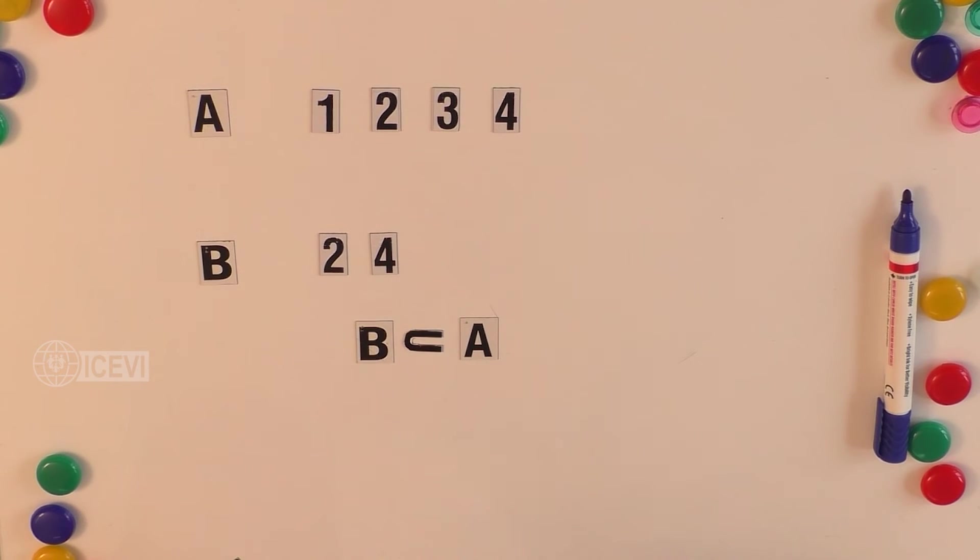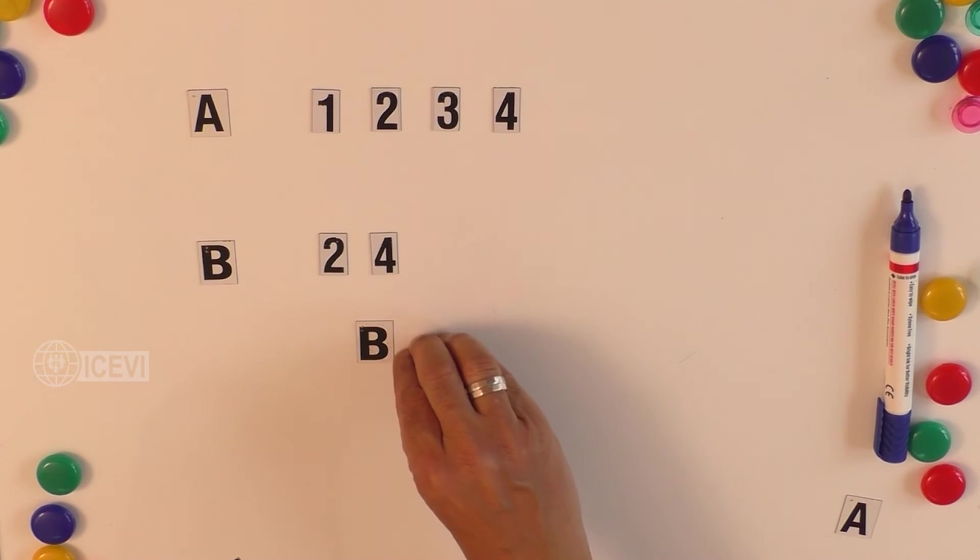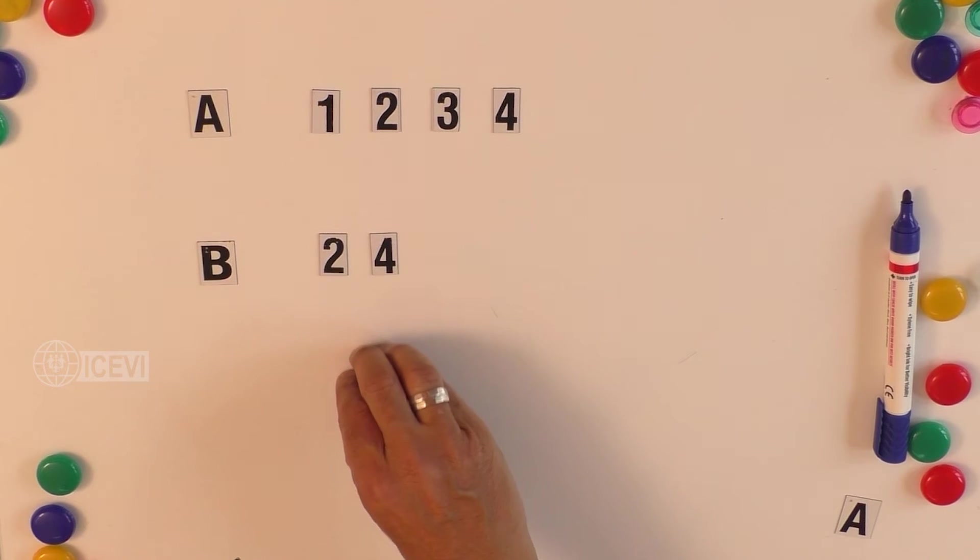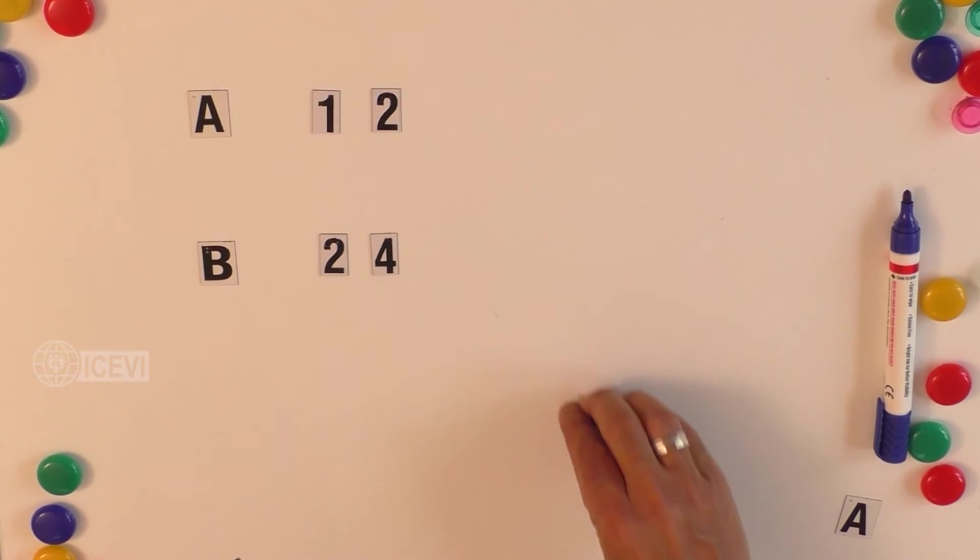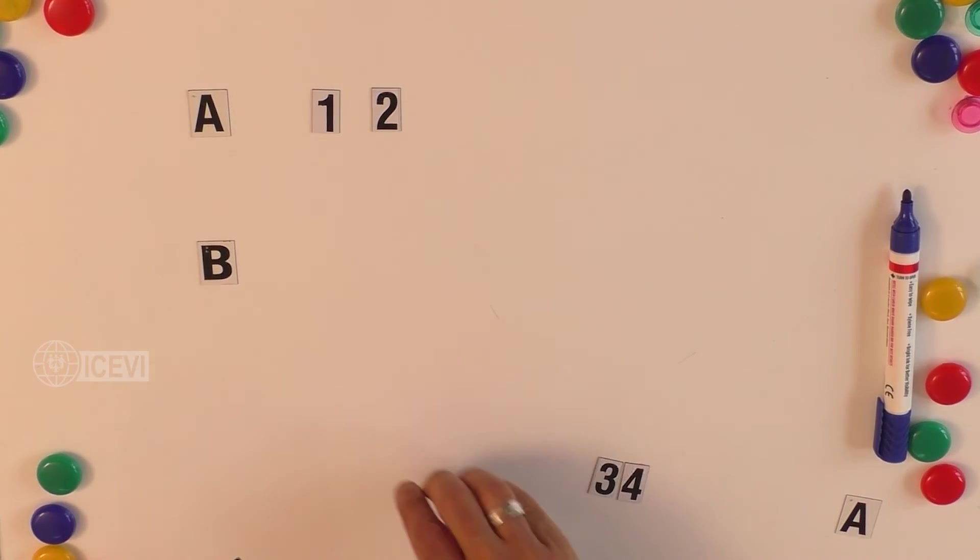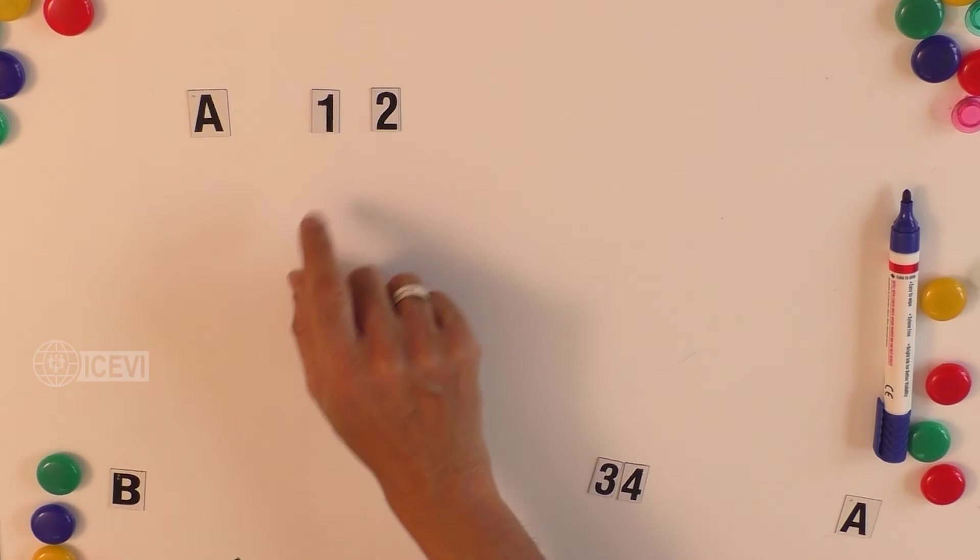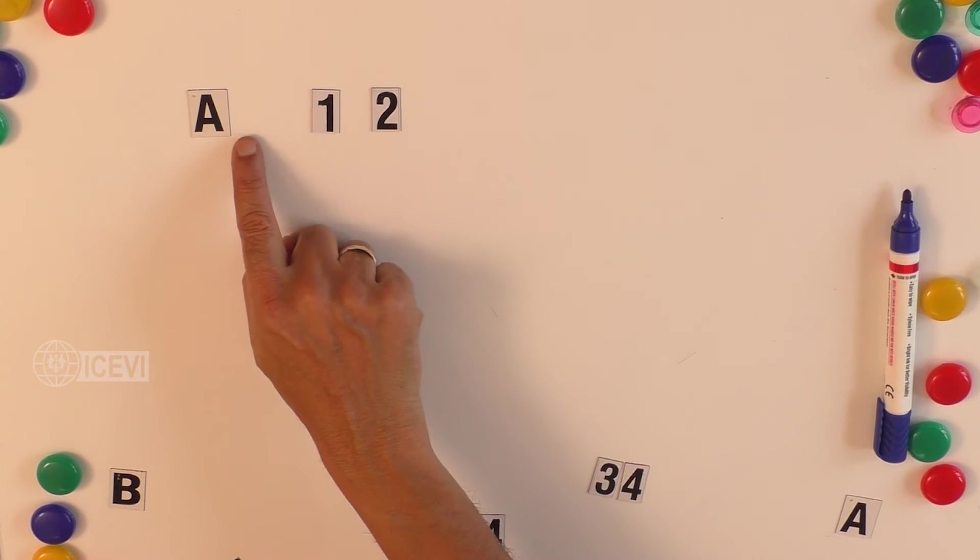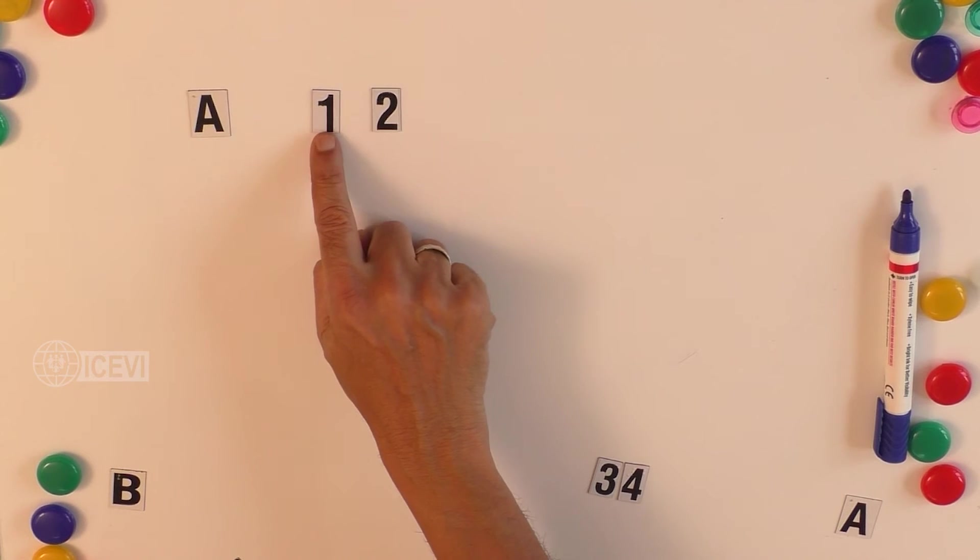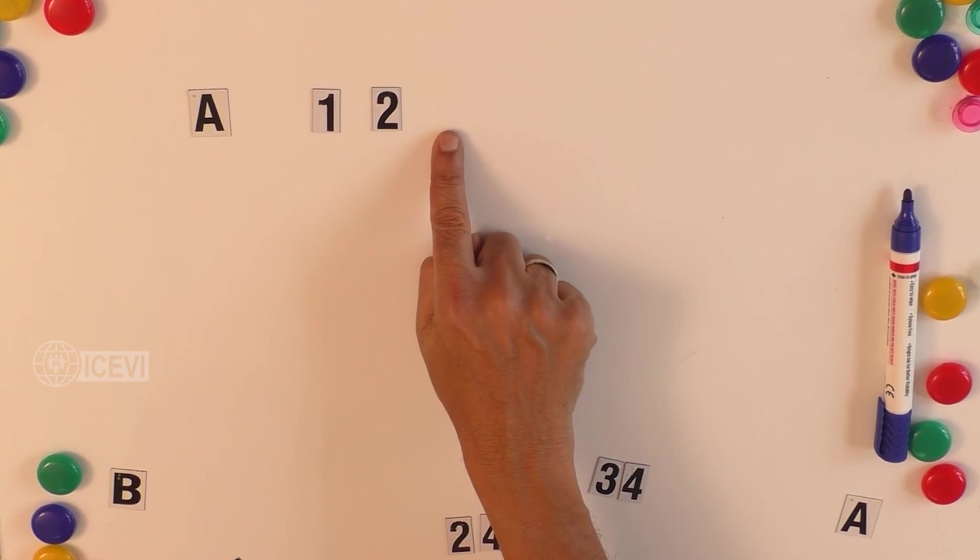This is how we define the subset of a set. Now let us talk about the proper subset. The subsets other than the set itself are called proper subsets. Now let us take a set, and we have two elements in set A: 1 and 2. So A is a set. Then what are the subsets of A?